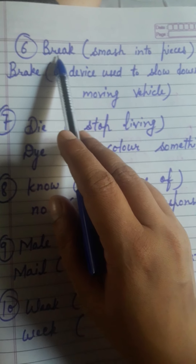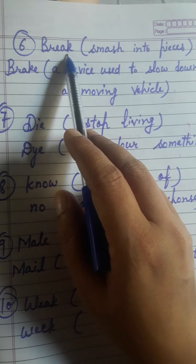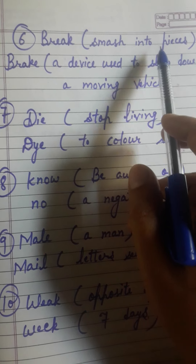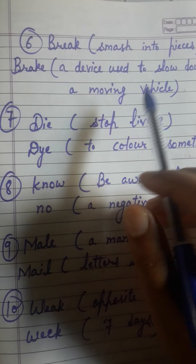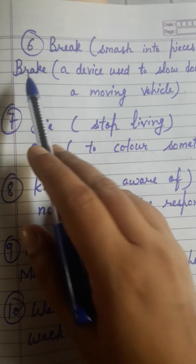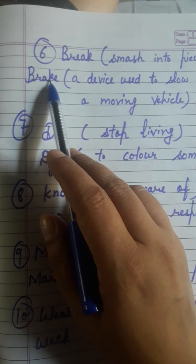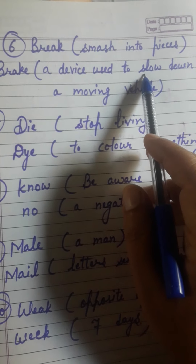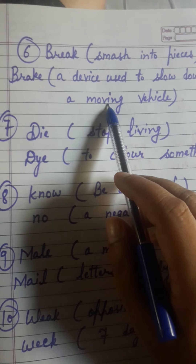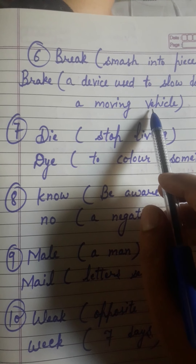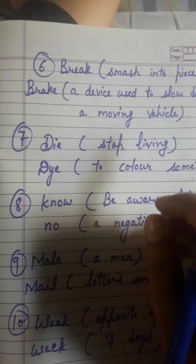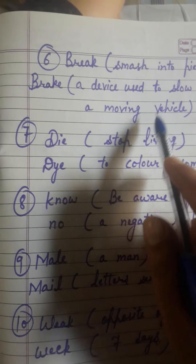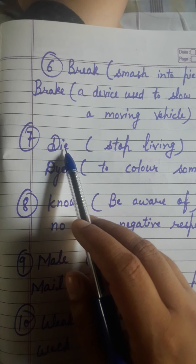B-R-E-A-K, break — means to smash into pieces, kisi bhi cheez ko pieces mein todna. B-R-A-K-E, brake — is a device used to slow down a moving vehicle, means jab kisi bhi chalte hue vehicle ko rokne ke liye jo device use kiya jata hai, usko brake bolte hain.